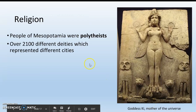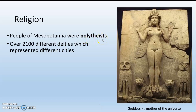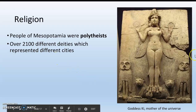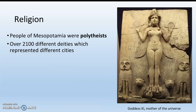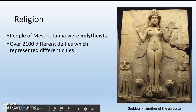Religion: the people of Mesopotamia were polytheists. Poly means many, theist means god — so they believed in many gods and goddesses. In fact, they had over 2,100 different gods and goddesses, each representing one of the city-states. This is the goddess Ki, considered the most important deity. In Mesopotamian religion she is the mother of the universe. She's depicted with two cool dogs, owls, and bird feet.